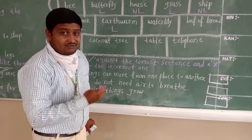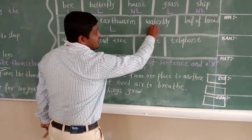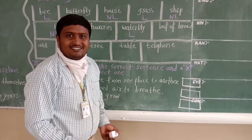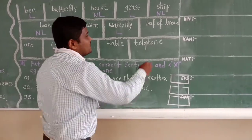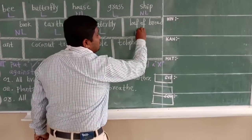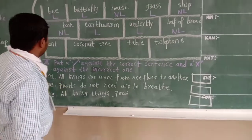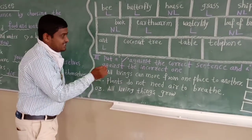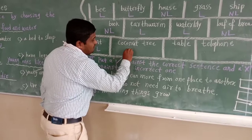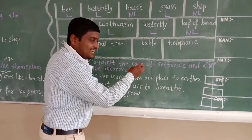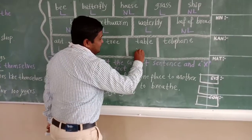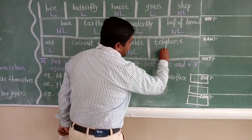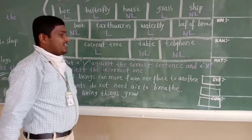Water lily — this is one type of plant, so it is living things. Loaf of bread — is this living things? No, this is non-living things. Coconut tree — living things. Table — non-living things. Telephone — non-living things. Very good.